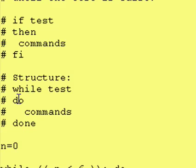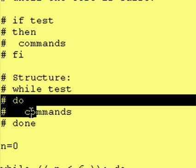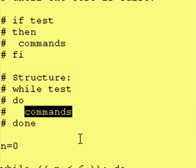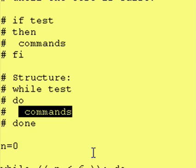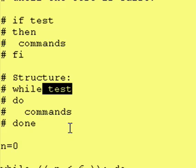However, if the test is true, then we go inside of the do to done portion and execute those commands. Now here's the catch. After we're done executing those commands, we go back up to the top and we rerun this test. If the test comes out true, then we go back in and rerun those commands. And we keep on doing that until this test comes out false.